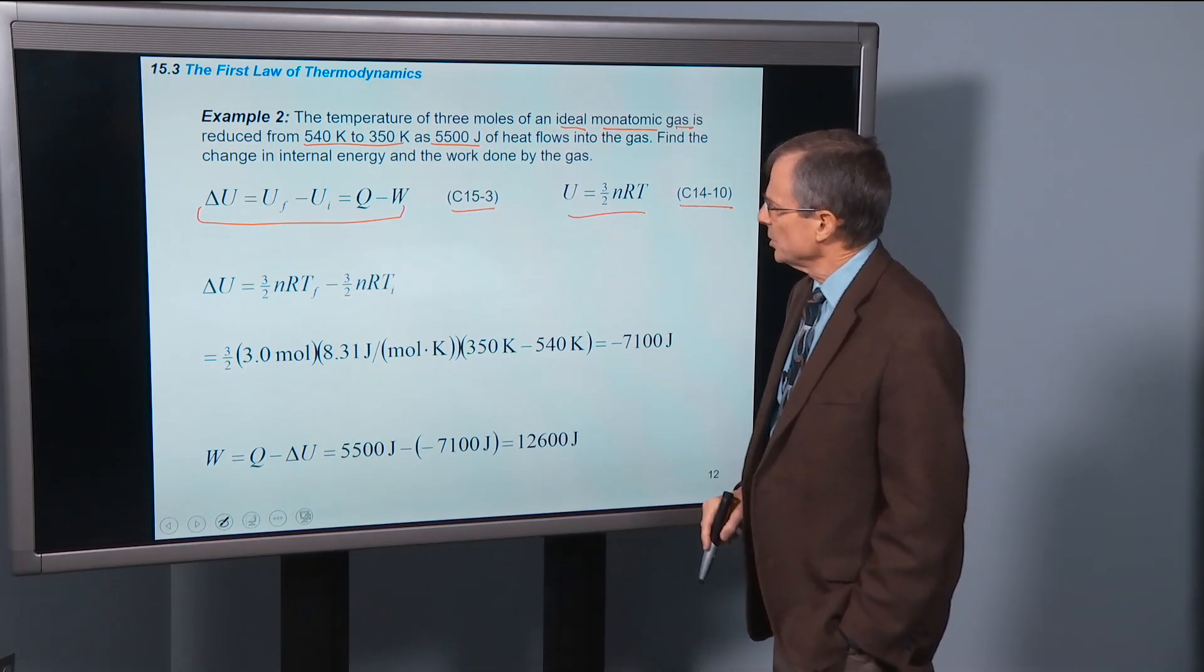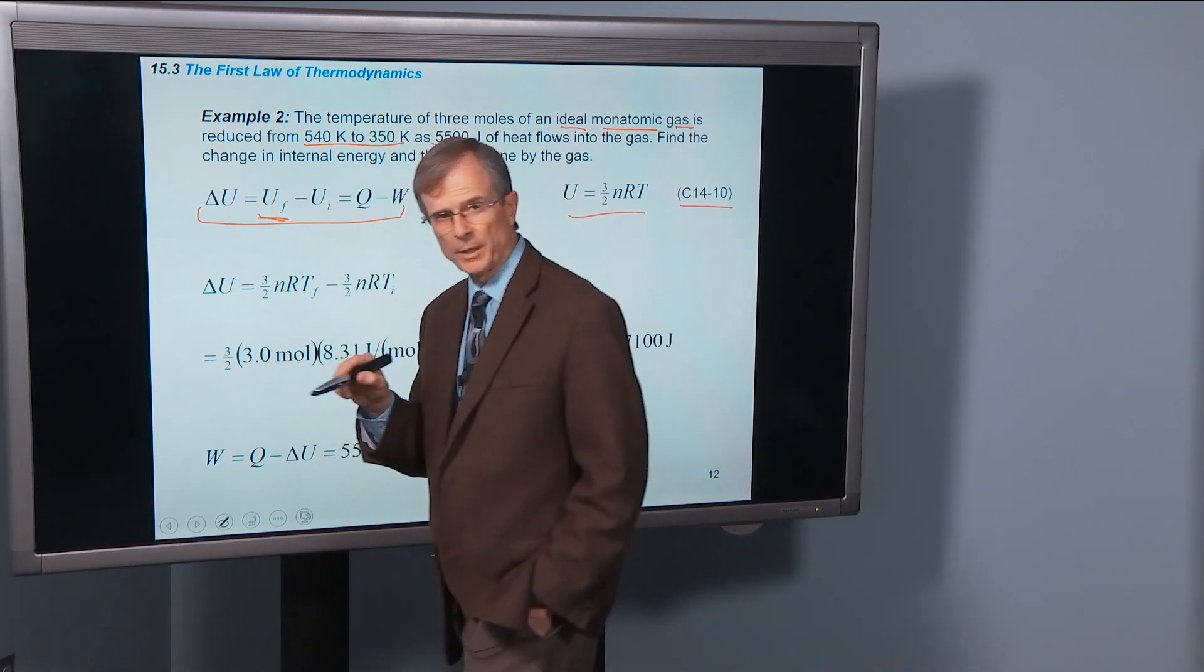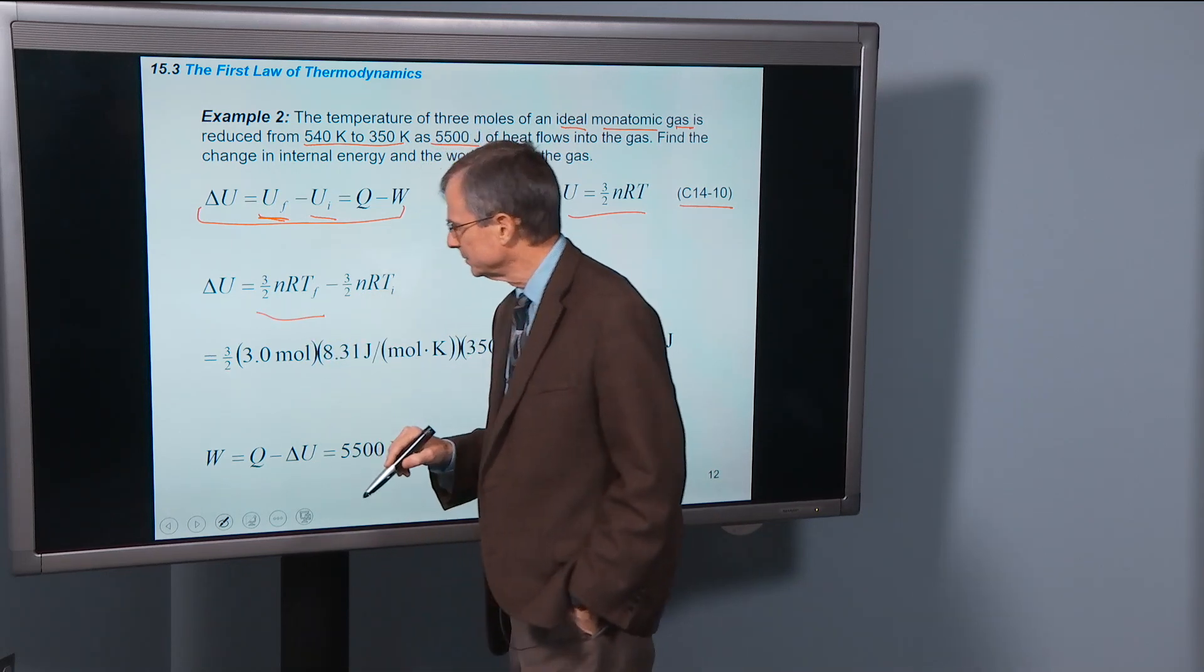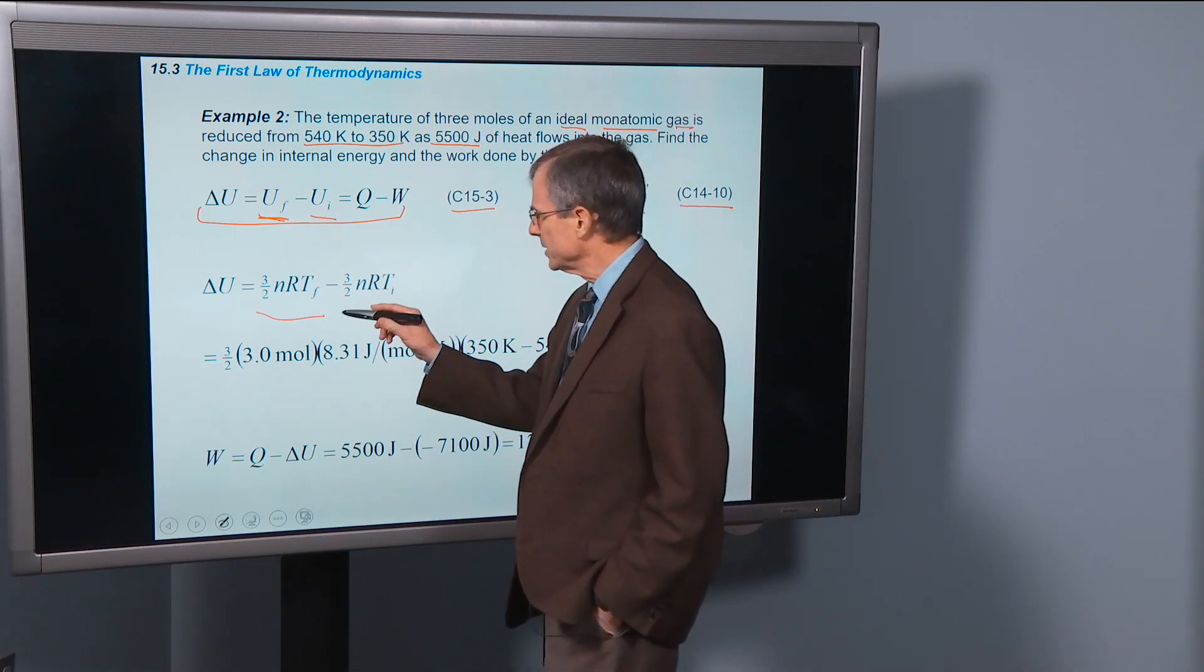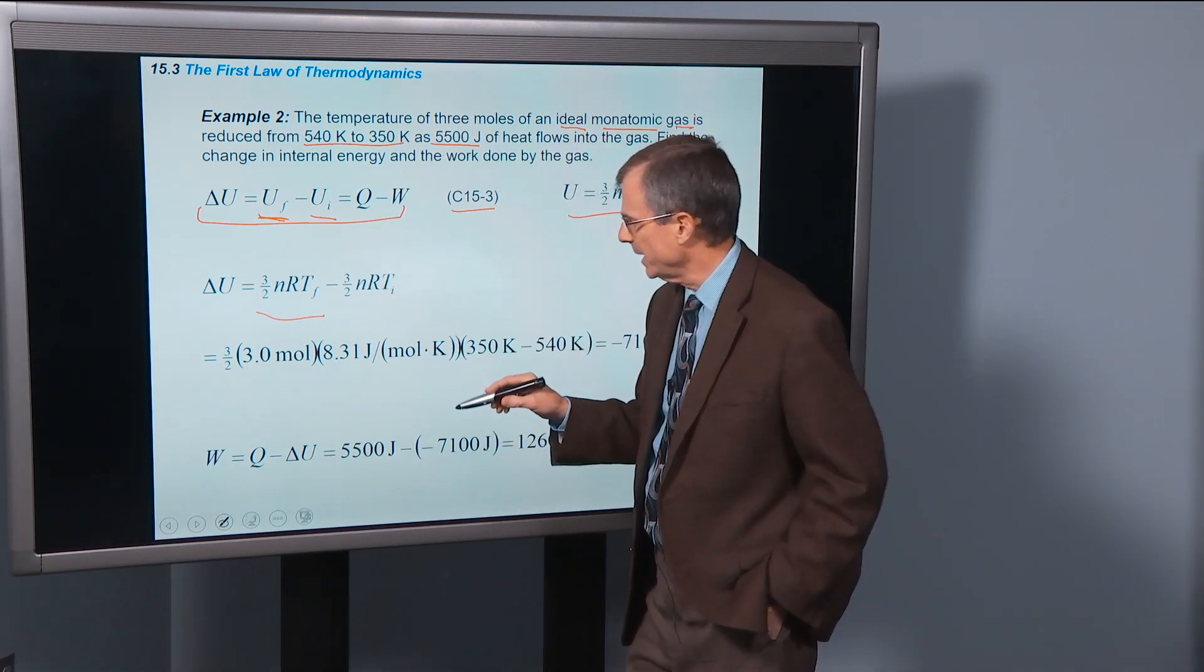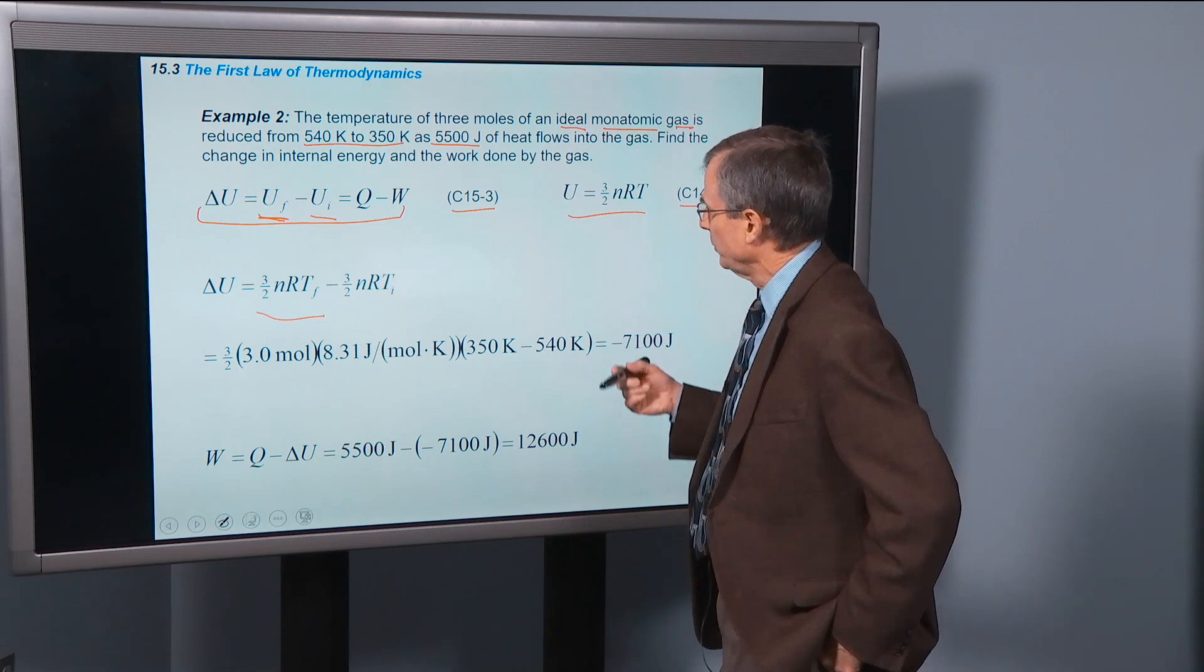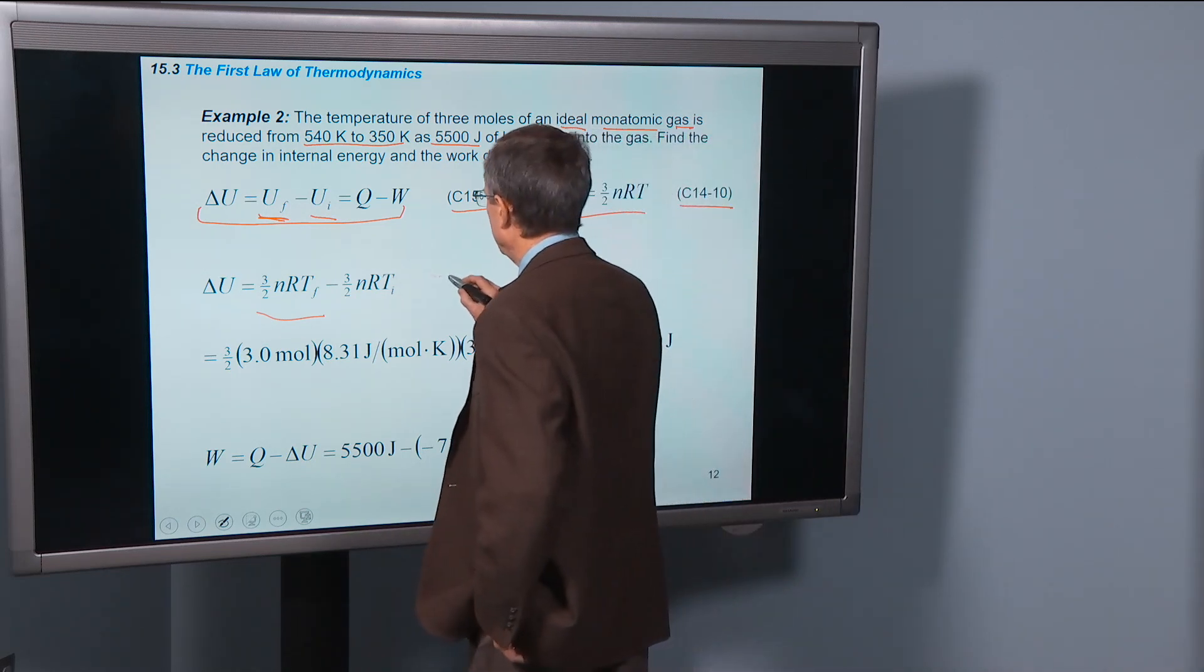And so the change in the internal energy is the final internal energy minus the initial internal energy, which is 3/2 nRT final minus 3/2 nRT initial. We just plug the numbers in and factor out the 3/2 nR.